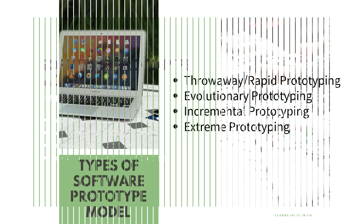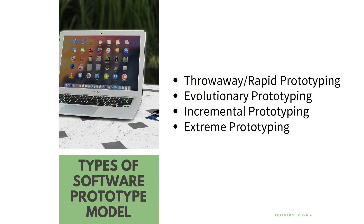Types of software prototyping: first is throwaway or rapid prototyping, which uses little effort with minimal requirement analysis to build a prototype. Next is evolutionary prototyping, where an actual functional prototype is built with minimal functionality at the beginning. Third is incremental prototyping, where multiple functional prototypes of various subsystems are built and then integrated to form a complete system. Fourth is extreme prototyping, which is used in the web development domain.